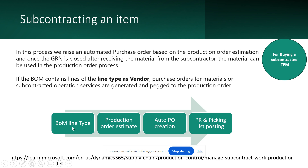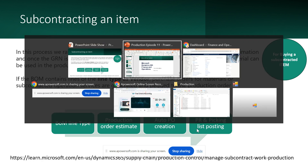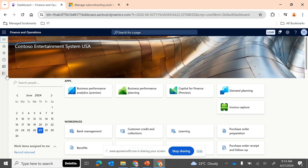The process: add the item in the BOM with the line type set to 'vendor'. When we created the raw material, we created one of the raw materials with line type vendor. At the time of production order estimation, an automatic purchase order will be generated for the vendor. Then you need to follow the traditional procure-to-pay process, complete the product receipt, and use the subcontracted item in your picking list posting. Let's go back to the system to understand this.